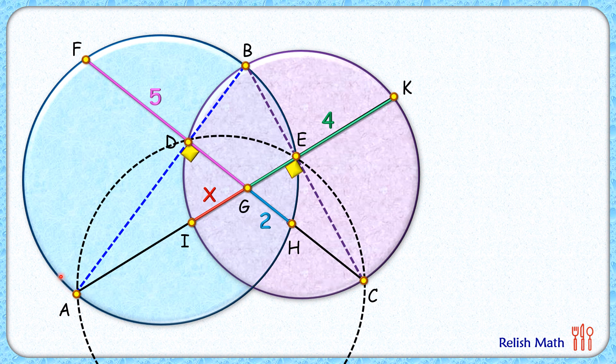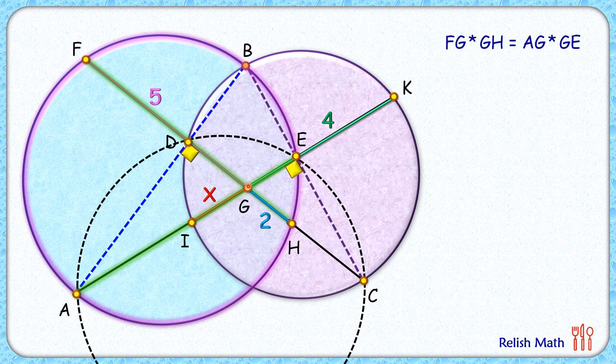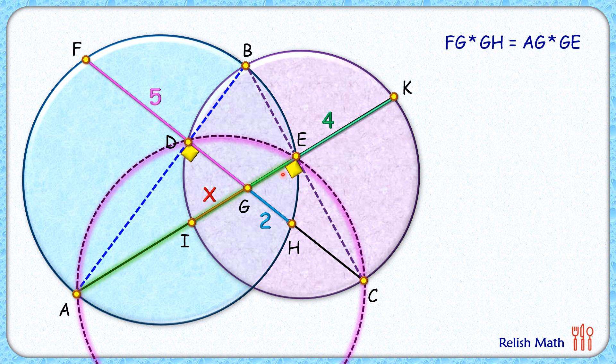Now if you look at the blue circle, we have got chords FH and chord AE intersecting at point G. Applying intersecting chord theorem, we will get FG times GH equals AG times GE.